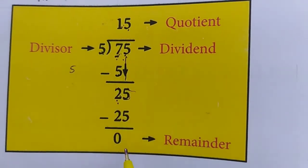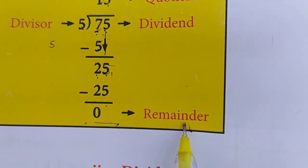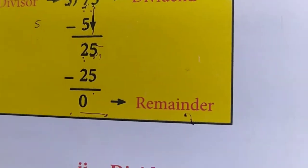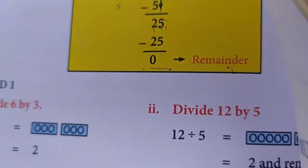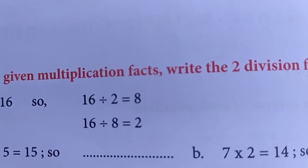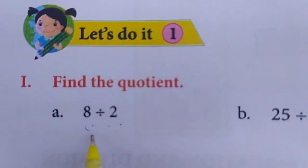Now 5 fives are 25. When you subtract this, what you will get? 0, remainder is 0. Now, page 132, here you have given some divisions. 8 divided by 2, how will you do?